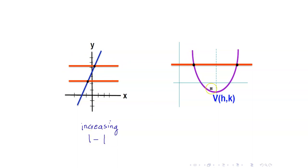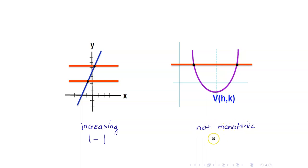Whereas if you have a parabola, it is first decreasing and then increasing. So therefore, this is not monotonic on its domain, and therefore it is not one-to-one.